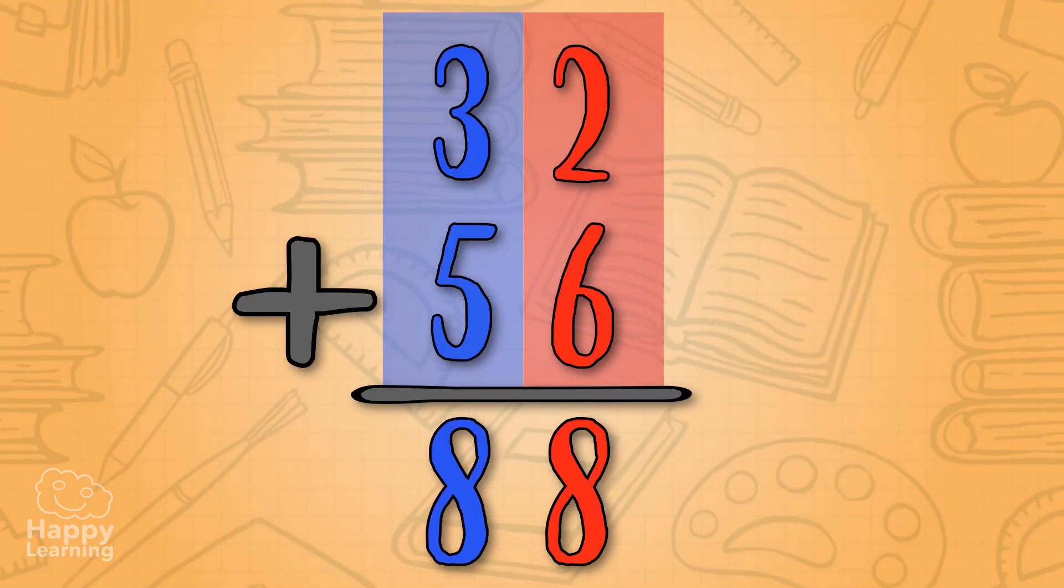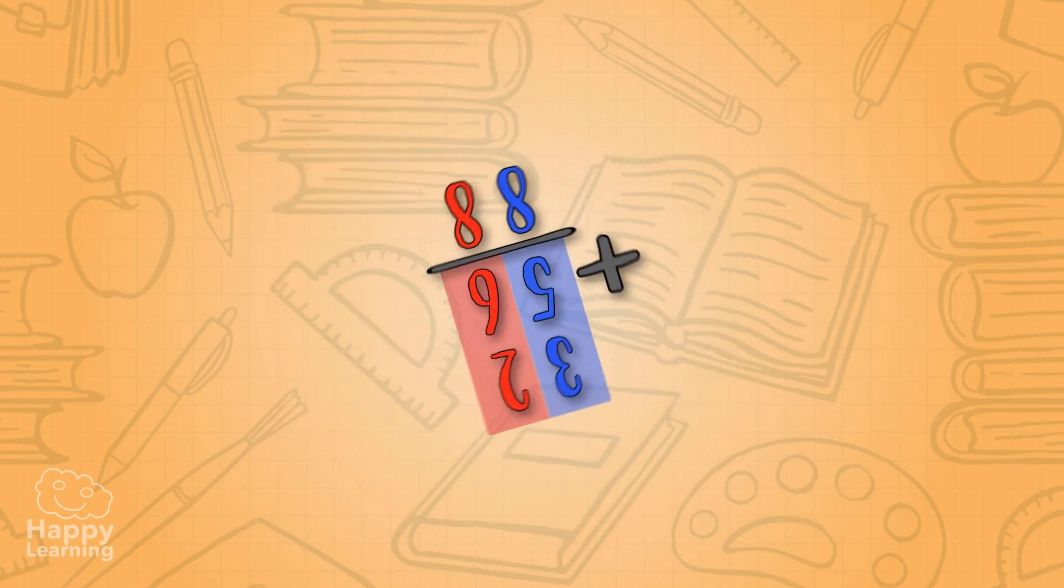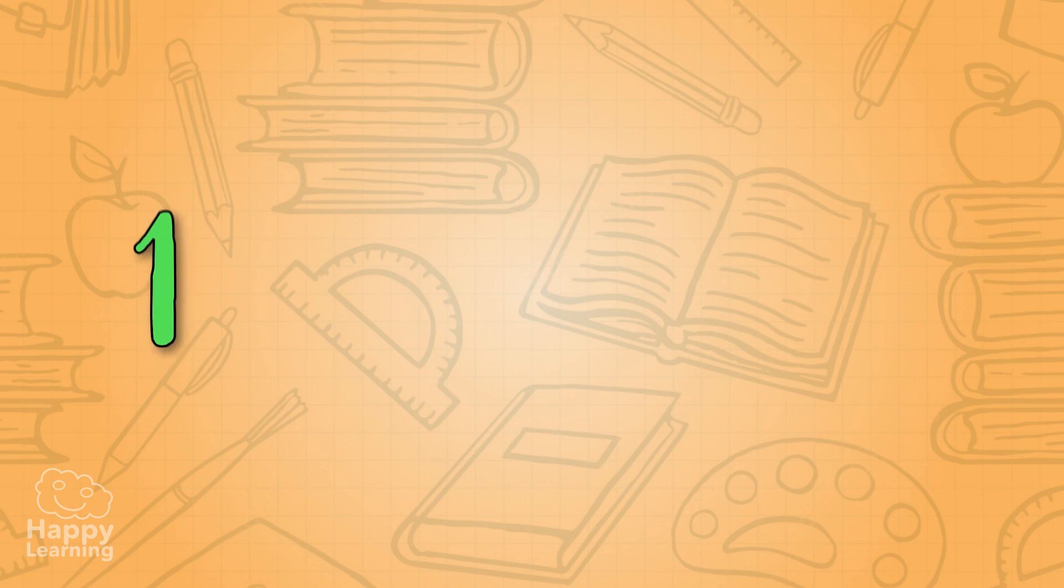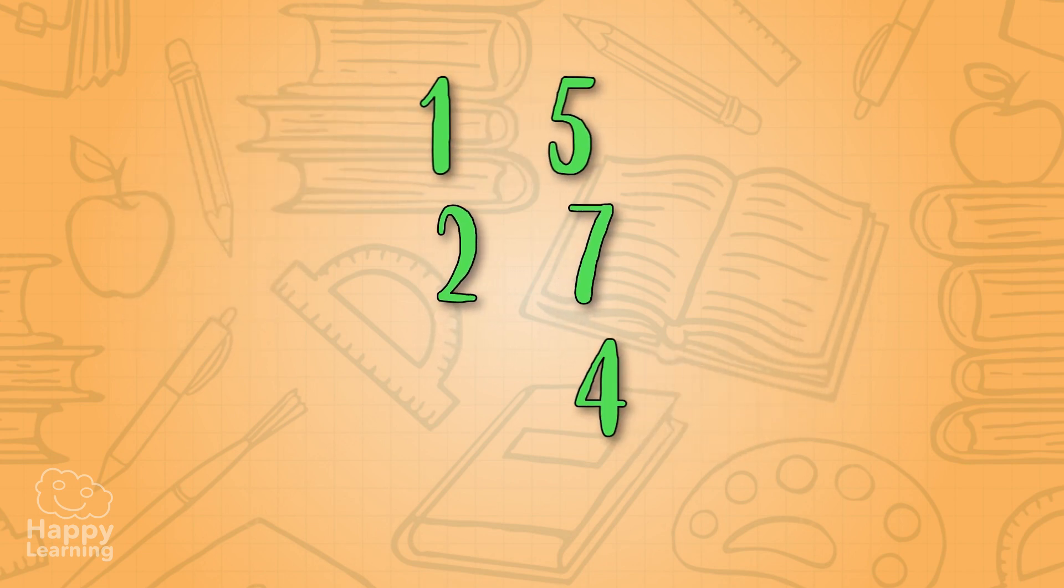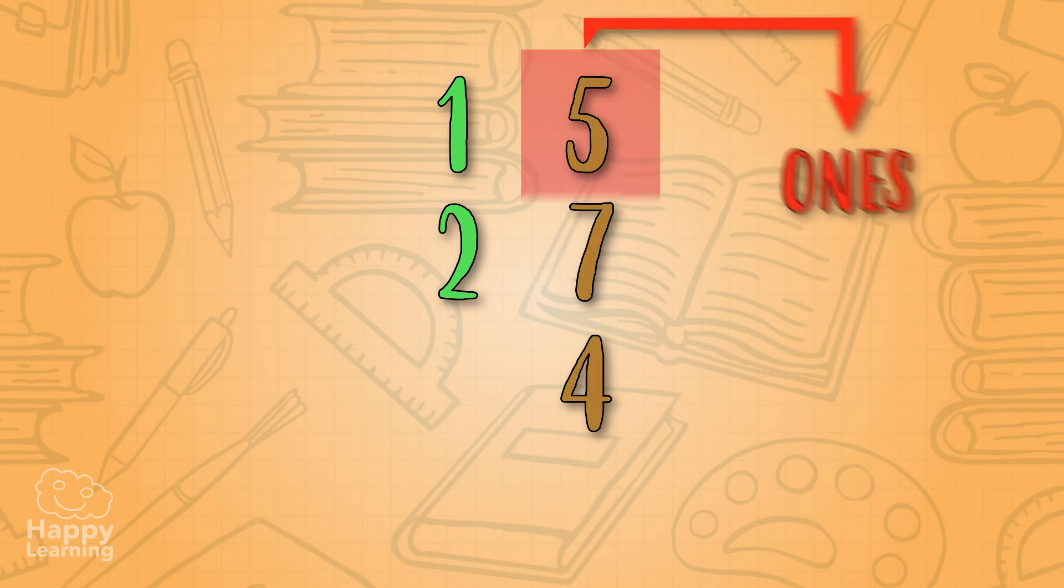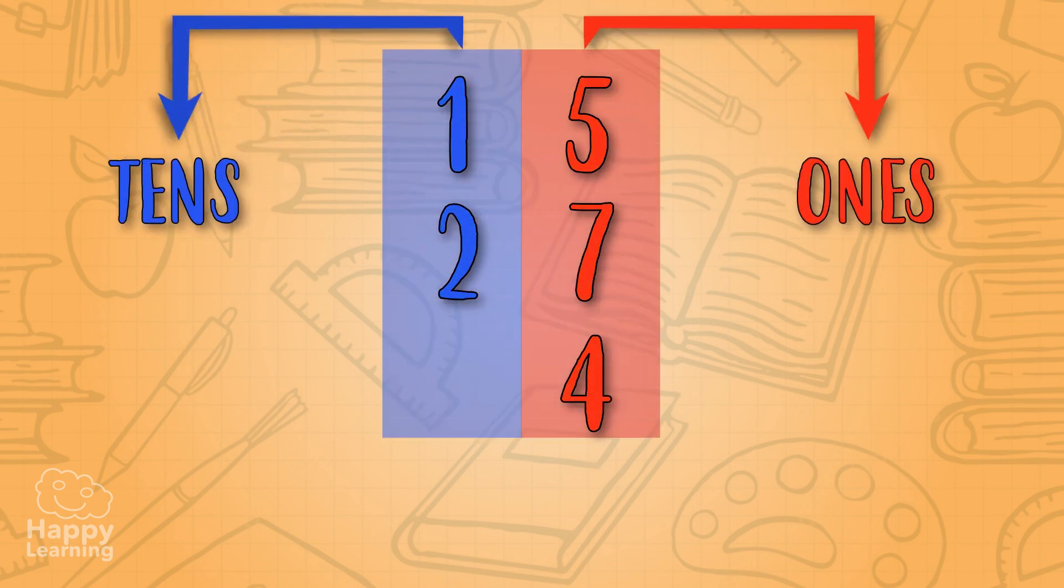But what happens if the addition has remainders and more than two summands? It's easy-peasy! Let's add fifteen plus twenty-seven plus four! As we've seen before, we place the summands under each other! Ones under ones, and tens after tens! It looks like this!